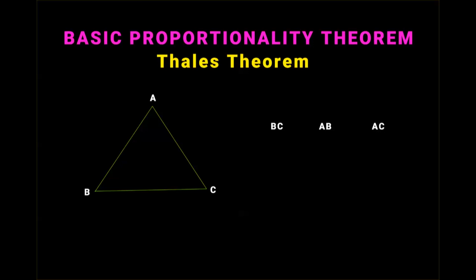Let us draw a line parallel to side BC, and let us name this line DE. Notice that this line DE intersects AB at point D and intersects AC at point E. DE is parallel to BC.